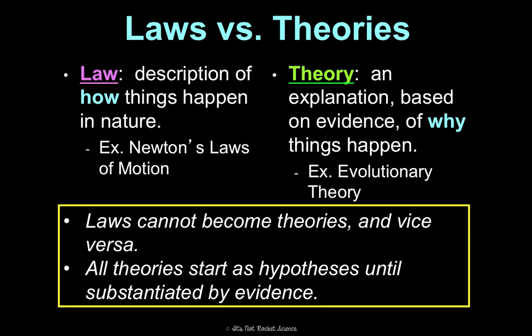Again, I remember theory and why, because they both end in Y. So a law explains how, a theory explains why. An example is evolutionary theory. It explains why things look, or populations act the way that they act. Important things to note, laws cannot become theories and vice versa. It's not like a theory is a guess, and once it becomes legitimate enough, it becomes a law. That's not the case. One explains how, one explains why. Those are different things.